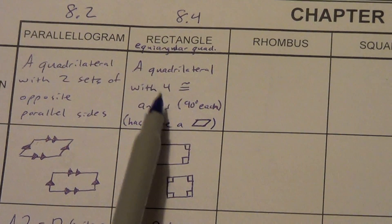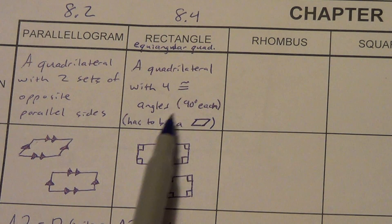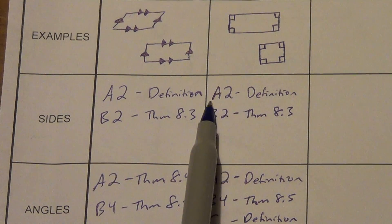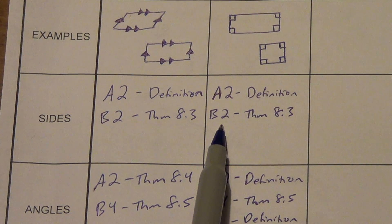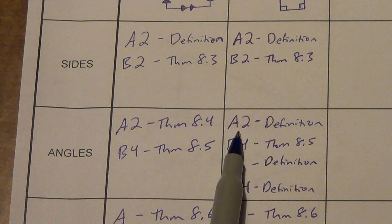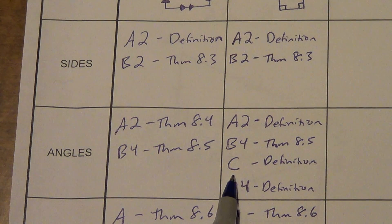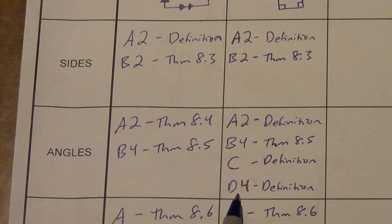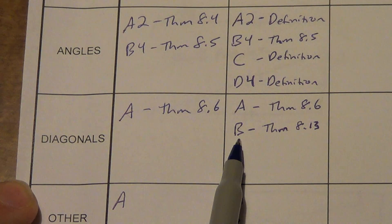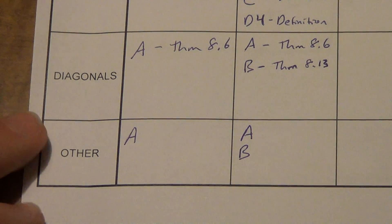To summarize what you need to know about rectangles: it's an equiangular quadrilateral — all four angles are 90 degrees — and therefore it must be a parallelogram. For sides: two sets of opposite parallel sides and two sets of opposite congruent sides. For angles: two sets of opposite congruent angles, four sets of consecutive supplementary angles, all angles congruent, and four sets of consecutive congruent angles. For diagonals: diagonals bisect each other and diagonals are congruent to each other. Area equals base times height, or length times width.